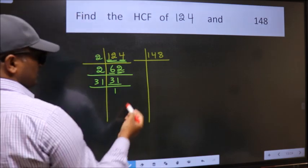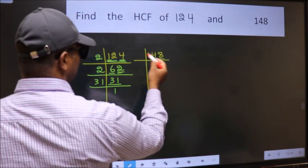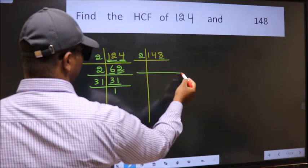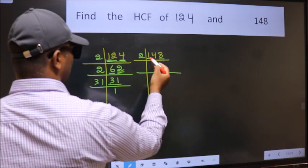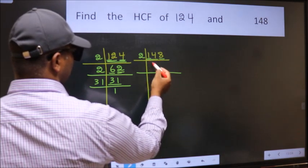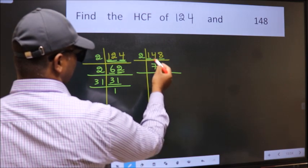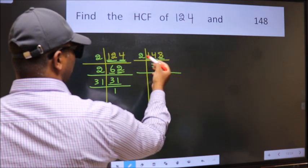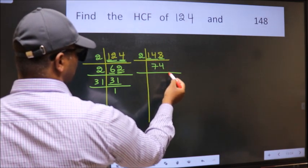The other number, last digit 8 is even, so take 2. First number 1 is smaller than 2, so take two digits, 14. When do we get 14 in 2 table? 2 times 7 is 14. The other number 8, when do we get 8 in 2 table? 2 times 4 is 8.